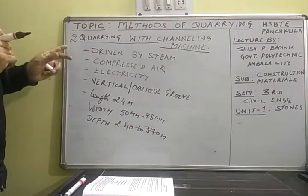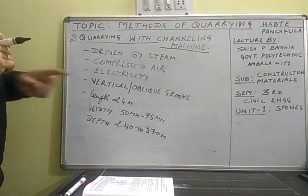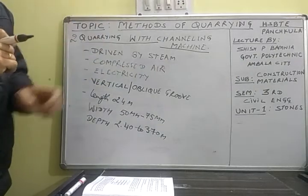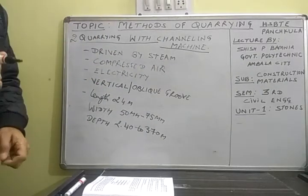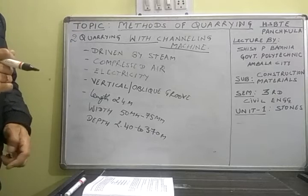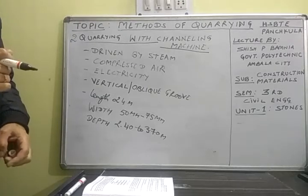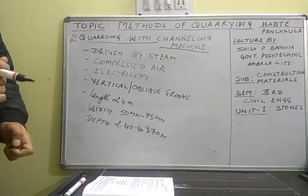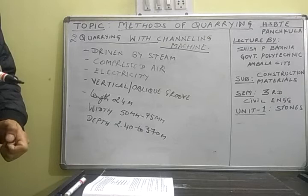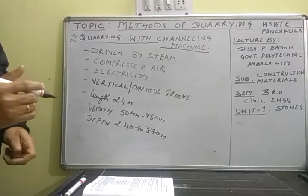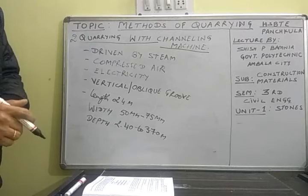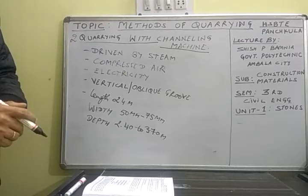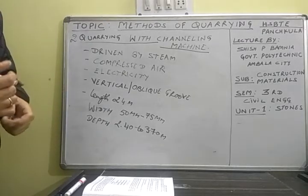The first method we have overcome with the use of channeling machines. It means that when we use hand tools, the process takes a lot of time and effort. To overcome this, mechanical engineering has provided us a number of machines.